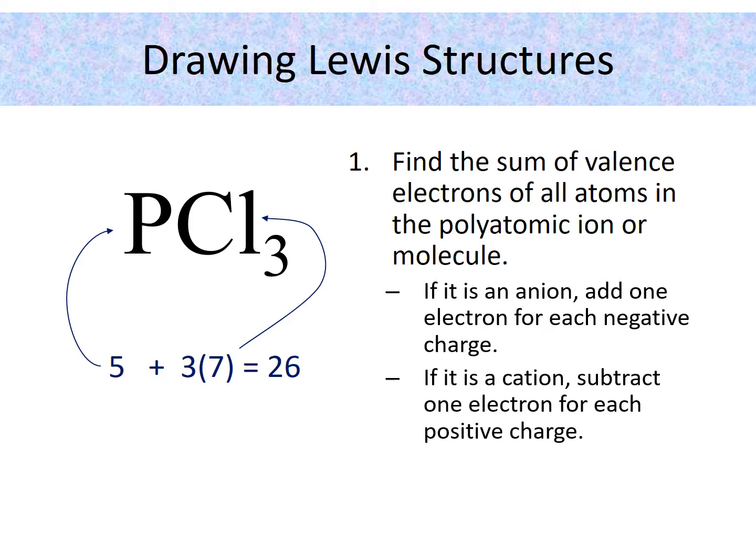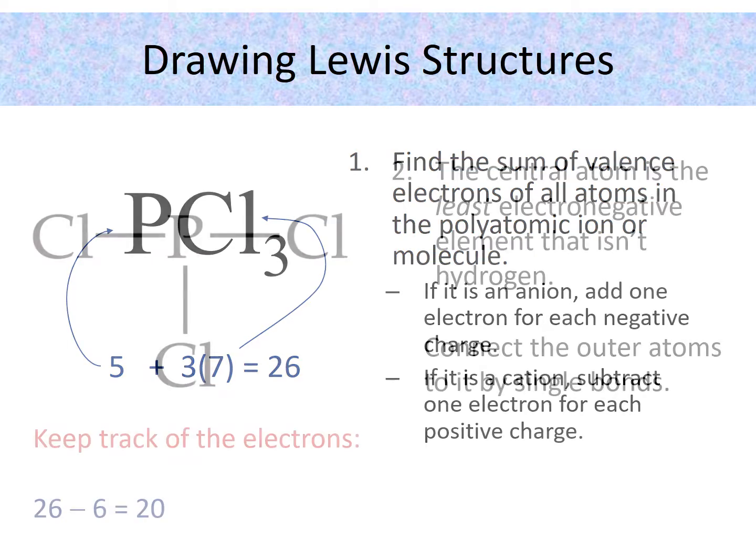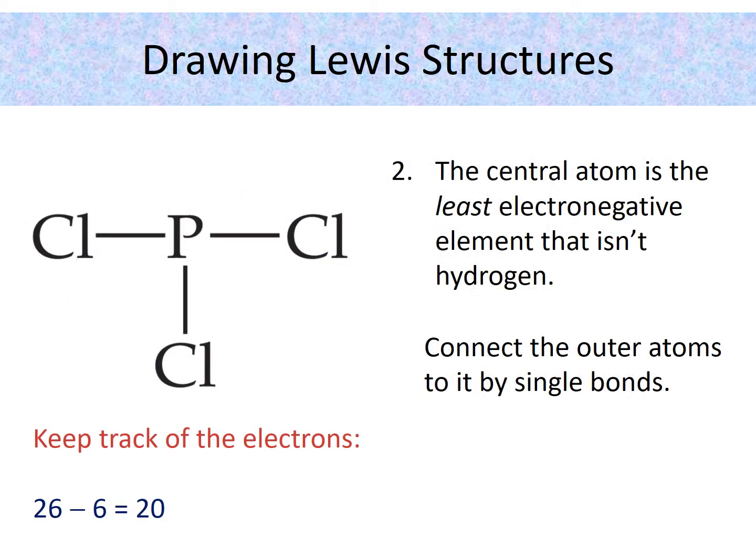Alright, so step one, you've summed up the valence electrons. The next thing we need to do is to draw the skeletal structure, which means you need to come up with the central atom and the peripheral atoms. So usually the central atom is the least electronegative element, and we for sure can't use hydrogen as a central atom.